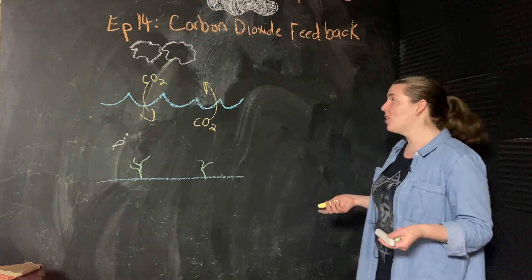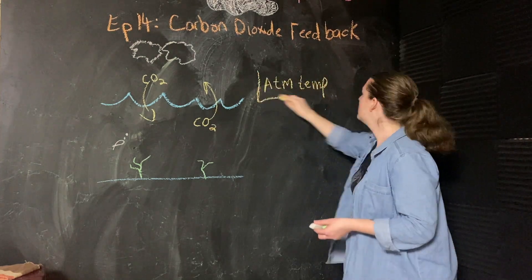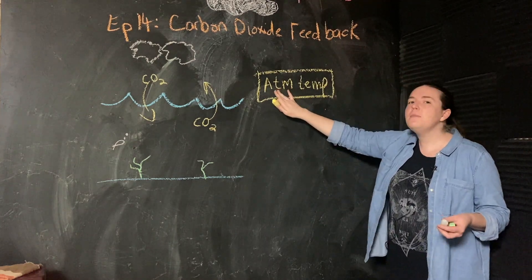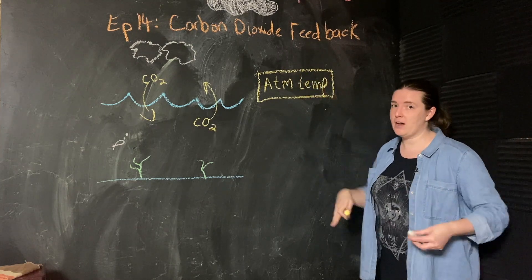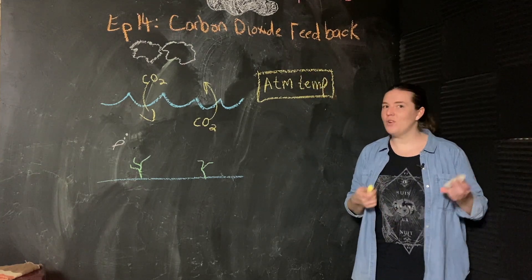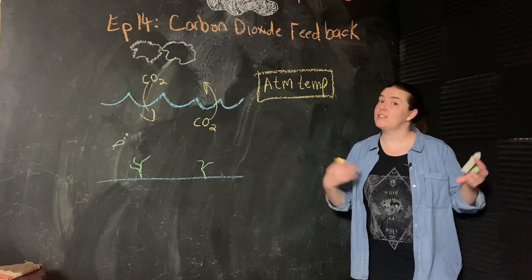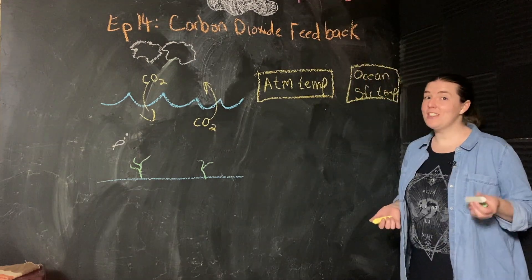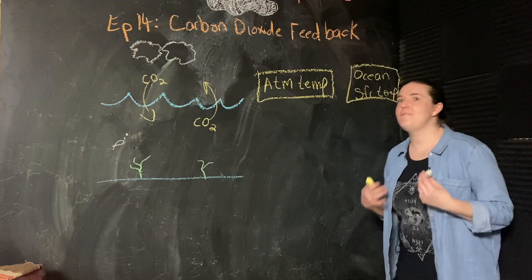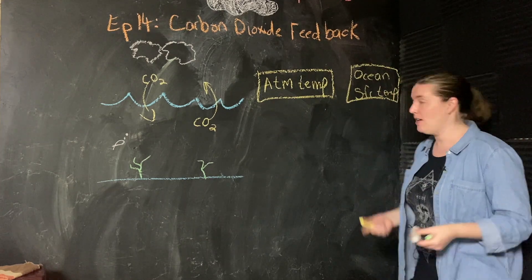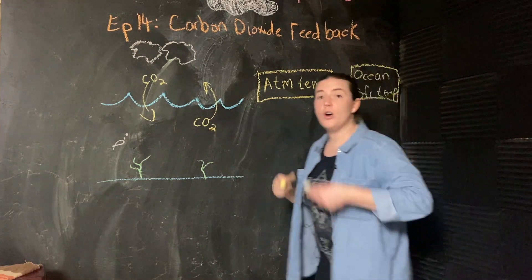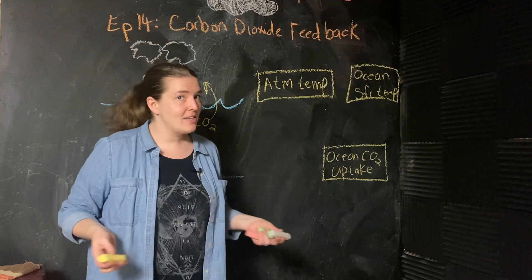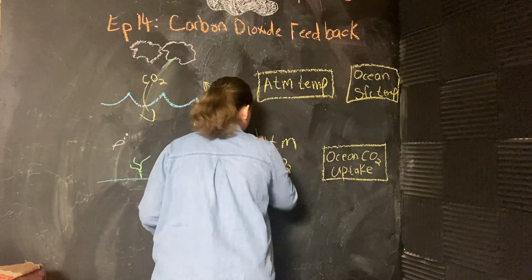As always, we're going to start with temperature. So notice, normally I say surface temperature. Here I specifically mean the temperature of the atmosphere. Because the temperature of the atmosphere is going to affect ocean surface temperature. Ocean surface temperature affects that solubility, so it affects ocean CO2 uptake. And ocean CO2 uptake is then going to affect atmospheric carbon dioxide concentrations.